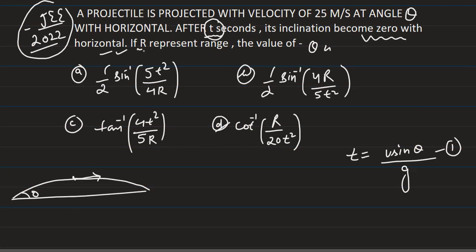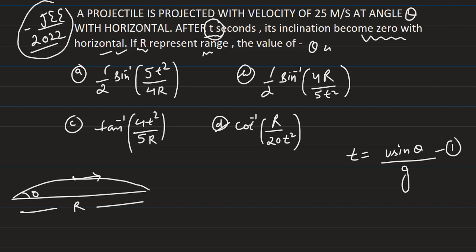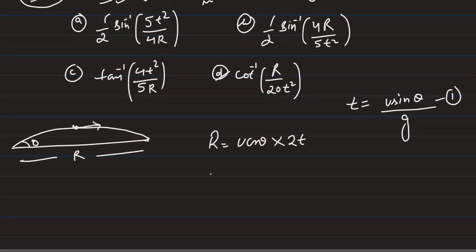There is also a condition in the question that capital R represents the range of this projectile. The range is simply horizontal velocity u cos θ multiplied by the time of flight. For range we need the full time of flight, while for maximum height we only need the time of ascent. So the time of flight is 2 times the time of ascent, giving us 2t.